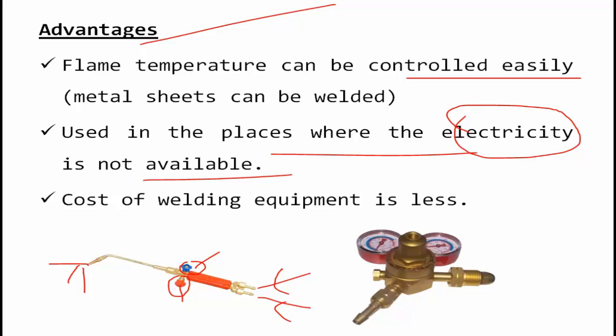Unlike processes such as shielded metal arc, MIG, or friction stir welding which require a power supply, in gas welding no power source is needed — we only use oxygen and acetylene gas. The cost of welding equipment is less compared to MIG welding and other processes. One limitation of this process is that it is preferred for joining thin sheets only.